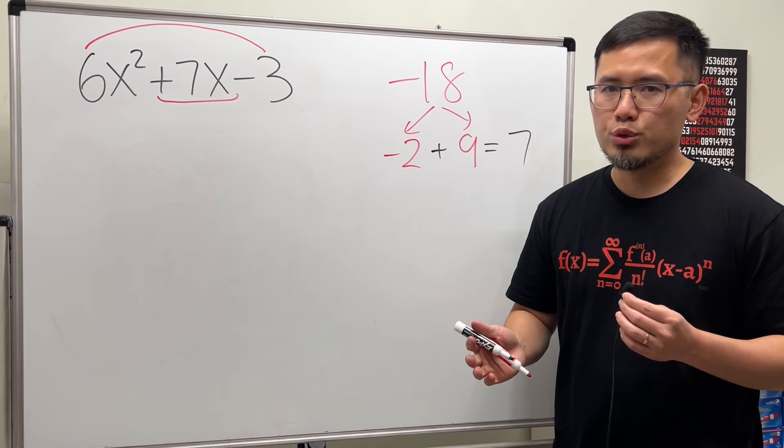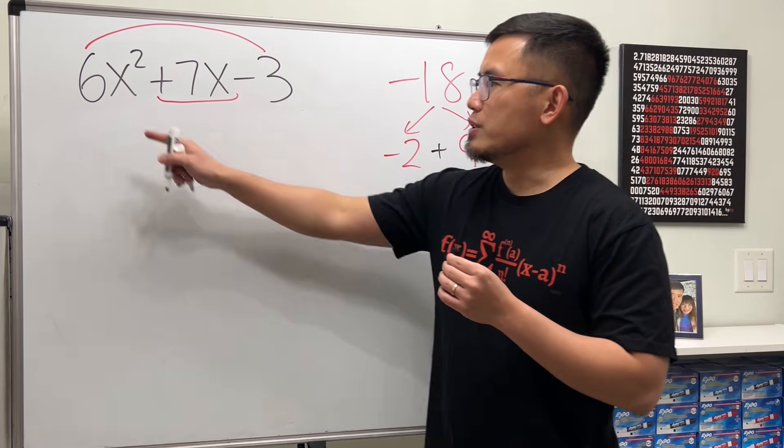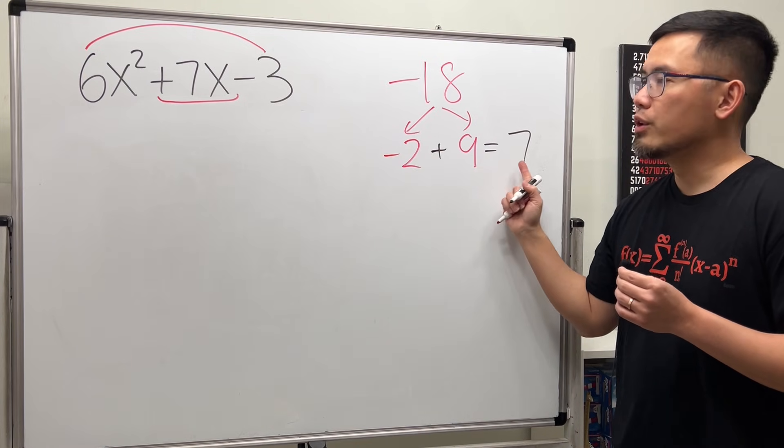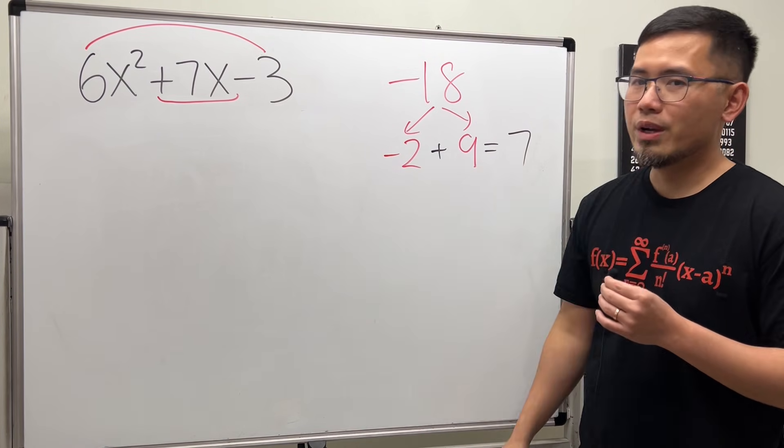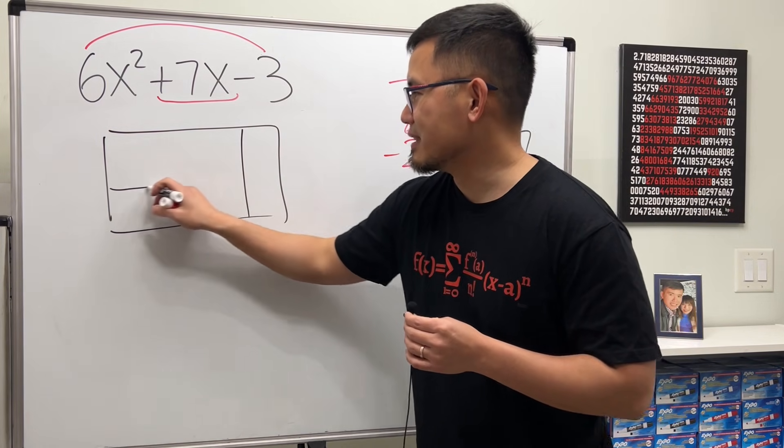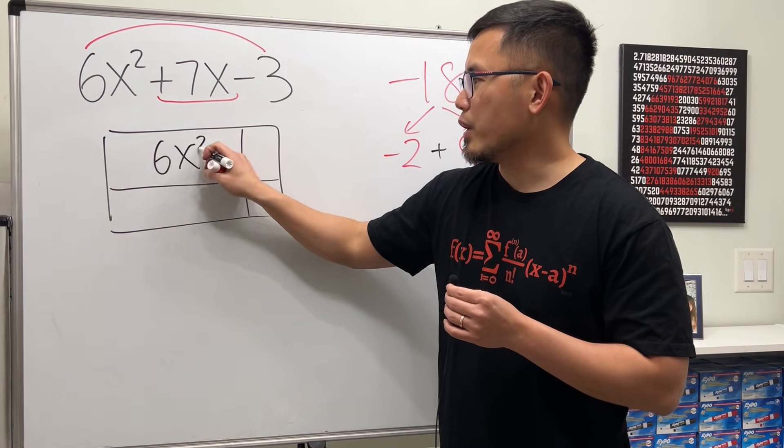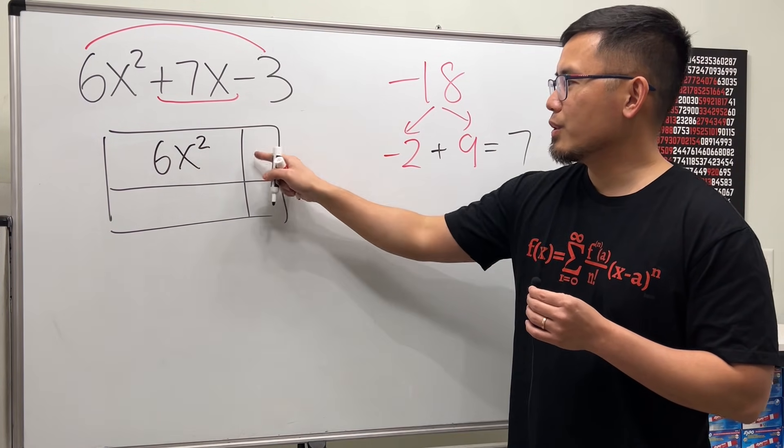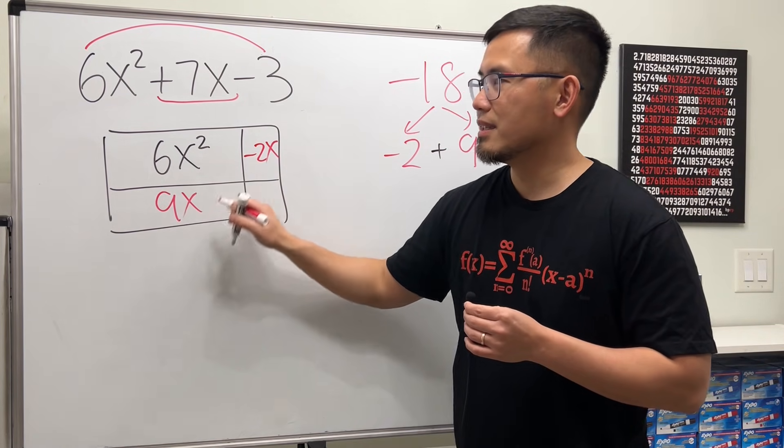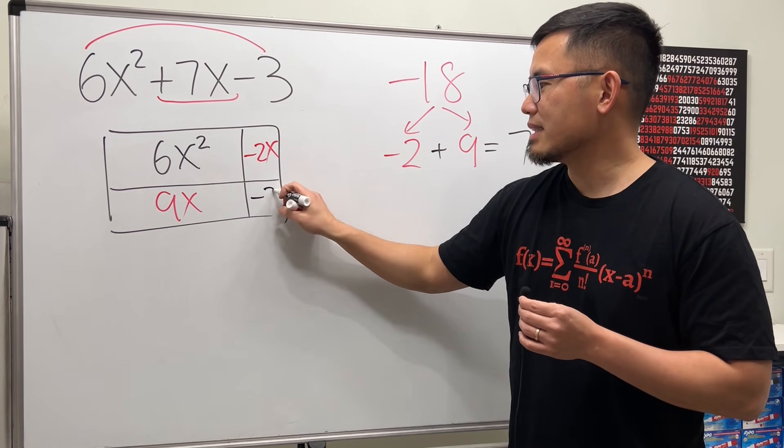For the second method, it's pretty much the same thing. It's called the AC method with the box. We still do a times c and get negative 18, and we still need negative 2 and 9 to get 7. Now, we are going to first draw a box like this, and then cut it. For this right here, go ahead and put down 6x squared. For this, write down minus 2x and the 9x. This and that gives us the 7x. Lastly, we have that minus 3.